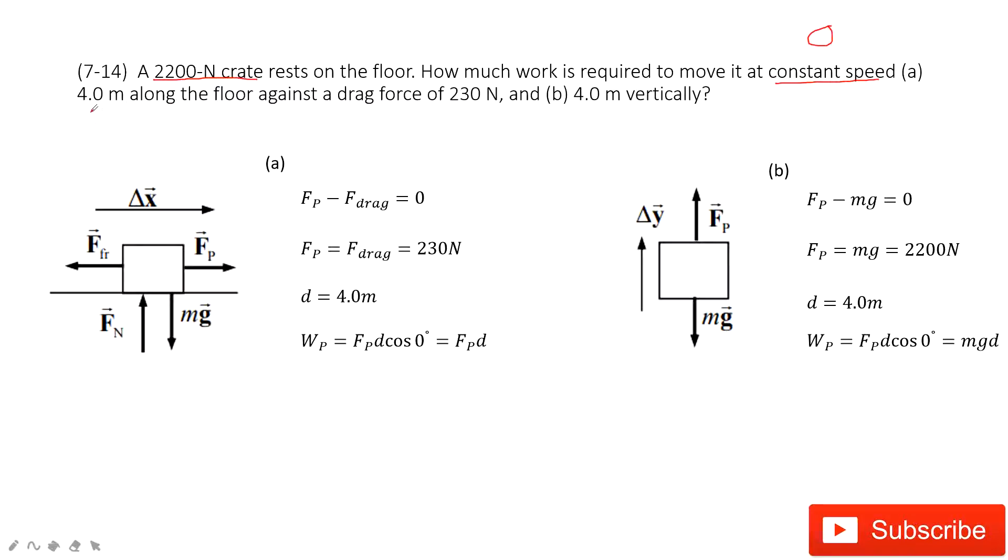And then, first one, it tells you this moves 4 meters along the floor against a drag force. So in this one, how can we do that? First, we can see this box on the floor, so it must be gravity, normal force. It's balanced in the vertical direction, no power.